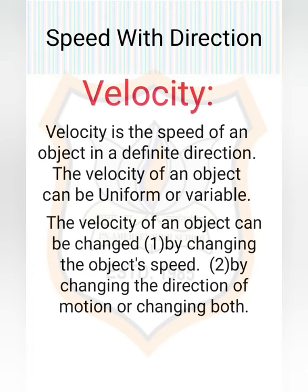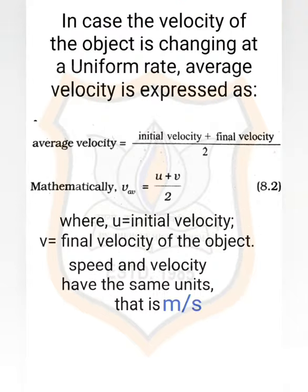Average velocity is calculated in the same way as average speed. If the velocity of an object is changing at a uniform rate, then average velocity is given by the arithmetic mean of initial velocity and final velocity for a given period of time. So average velocity equals initial velocity plus final velocity divided by 2. Mathematically: v_av = (u + v) / 2, where u is initial velocity and v is final velocity. Speed and velocity have the same units — meter per second.